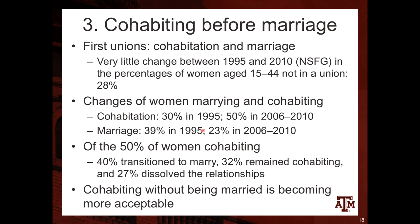The third topic is cohabitation. The term 'first unions' refers to both cohabitation and formal marriage together. When analyzing the percentage of women in first unions, from 1995 to 2010, the percentage of women aged 15 to 44 not in a union has been stable at around 28%, based on the National Survey of Family Growth in the US.